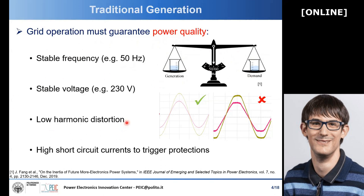We also require high-quality voltage both in terms of amplitude and in terms of harmonic distortion — so we want a clean sinusoidal waveform. And finally, we also want very high short-circuit currents in case of short-circuit faults, because we want to trigger protection devices to isolate the fault, clear it, and solve the issue.